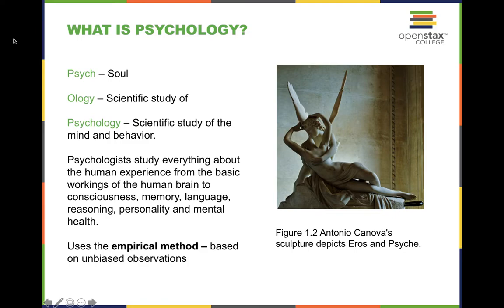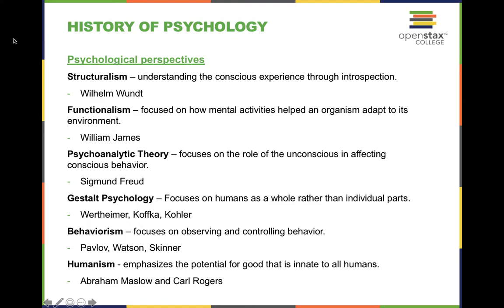Whenever it comes to science, if we can't touch, feel, taste, or sense it, how can we adequately study it, apply the scientific method, and have it be considered empiricism? Empiricism, or the empirical method, is based on unbiased observations. When it comes to science, it has to be unbiased and falsifiable. Whenever you have something that's unobservable, you can't falsify it — it's unfalsifiable.